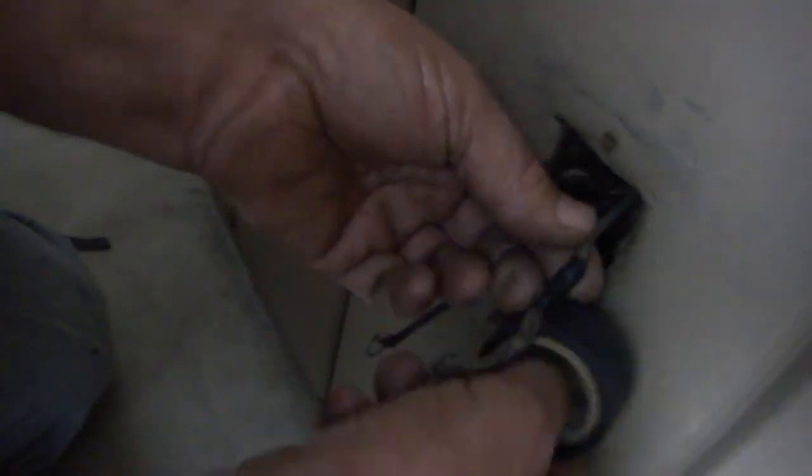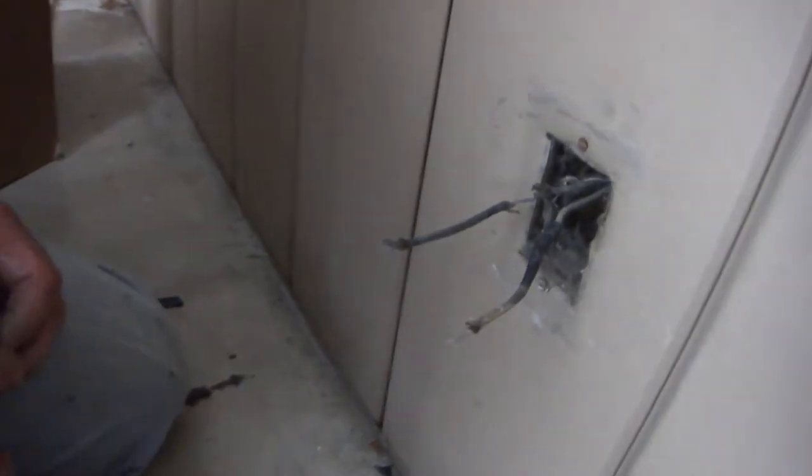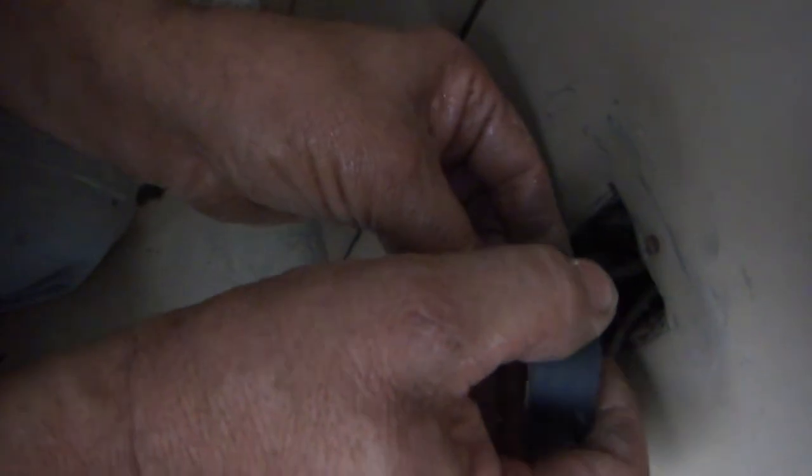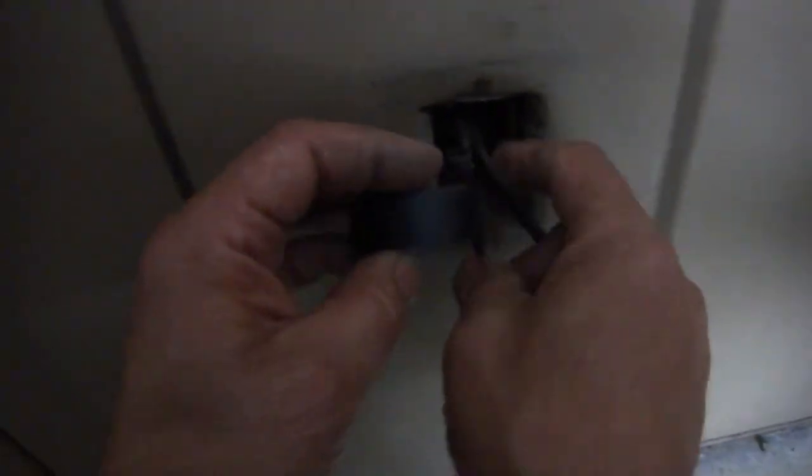Now I'm going to straighten out that old hook here so I can put it into my socket. Okay, we've got the plug off and now we've taped off the first wire. We want to leave this wire extended so we can put the new plug in there.